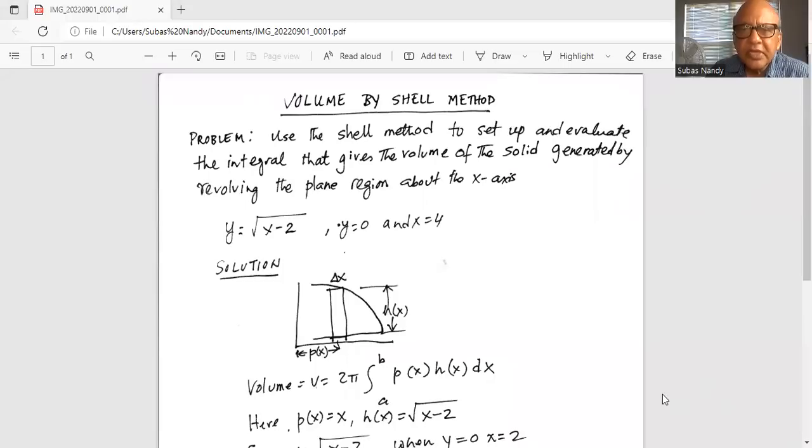So this is a problem on volume by shell method. Problem: use the shell method to set up and evaluate the integral that gives the volume of the solid generated by revolving the plane region about the x-axis. So y is given as square root of x minus 2, y equal to 0 and x equal to 4. These are the boundaries.